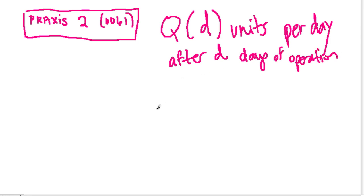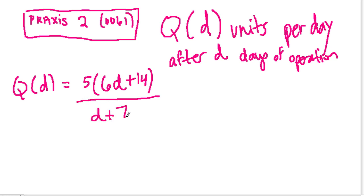And then they say Q of D equals, and they give us the function, 5 times 6D plus 14 over D plus 7. And it says, assuming that this machine continues to work efficiently, approximately how many components is the machine able to produce per day after being in operation for a long extended period of time.